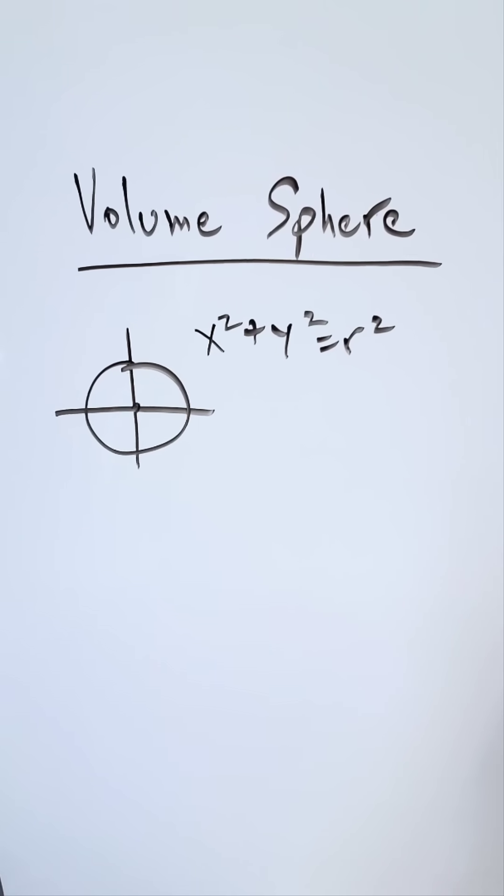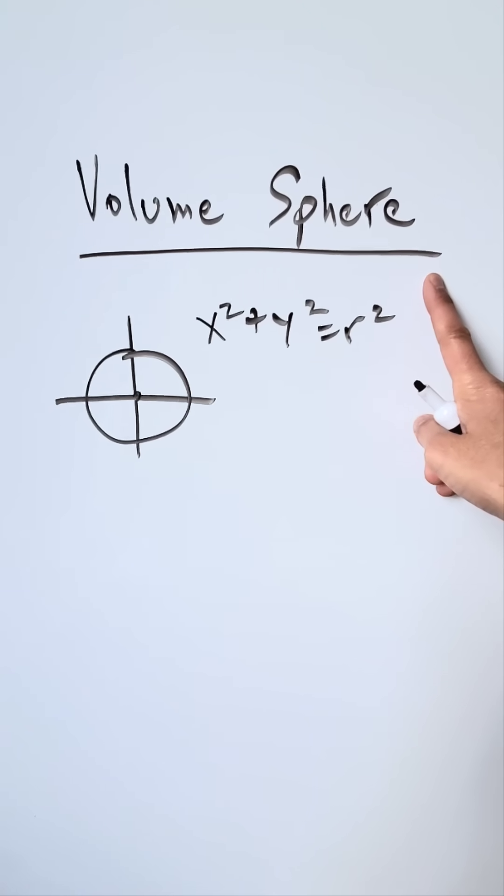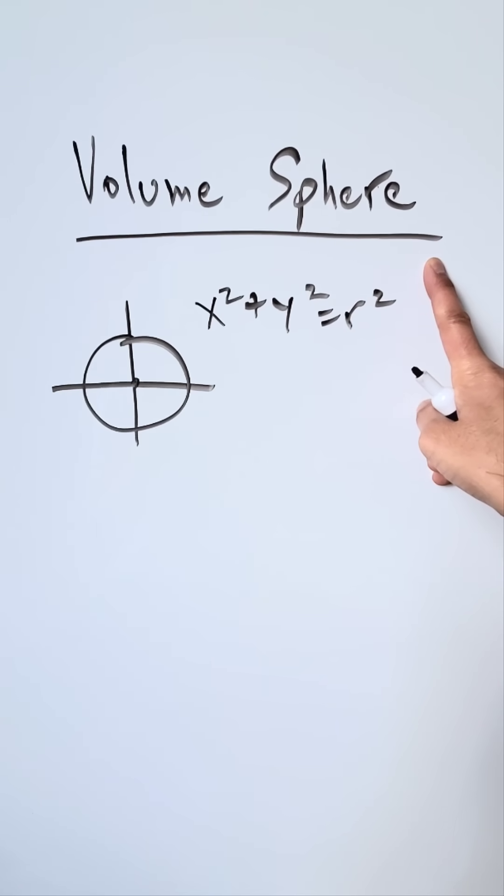Let's derive the volume of a sphere. You know that from geometry: 4 over 3 pi r cubed. Let's derive it using calculus.